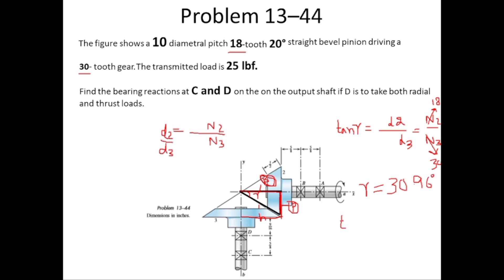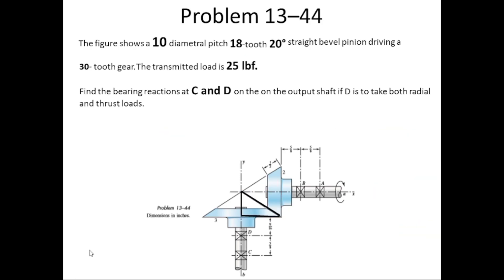Similarly, tan(Γ) = d3/d2 = N3/N2 = 30/18, so capital Γ = 59.04°. From the diagram we can identify this right-angle triangle where the base is the radius of gear 2, the perpendicular is the radius of gear 3, and the hypotenuse connects them. tan(Γ) = r3/r2 = N3/N2.